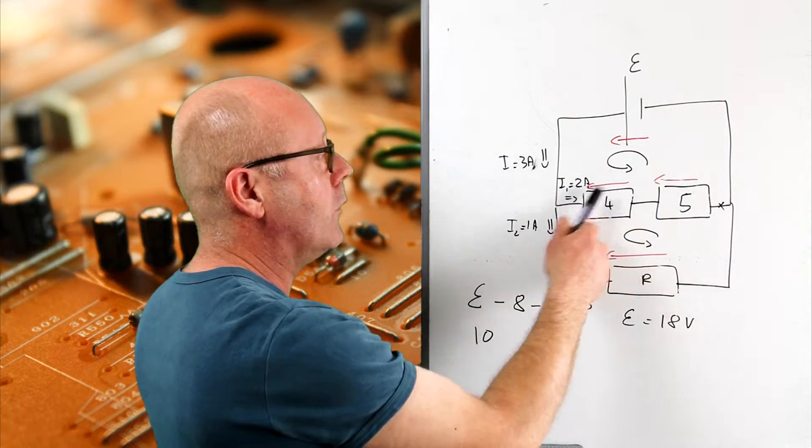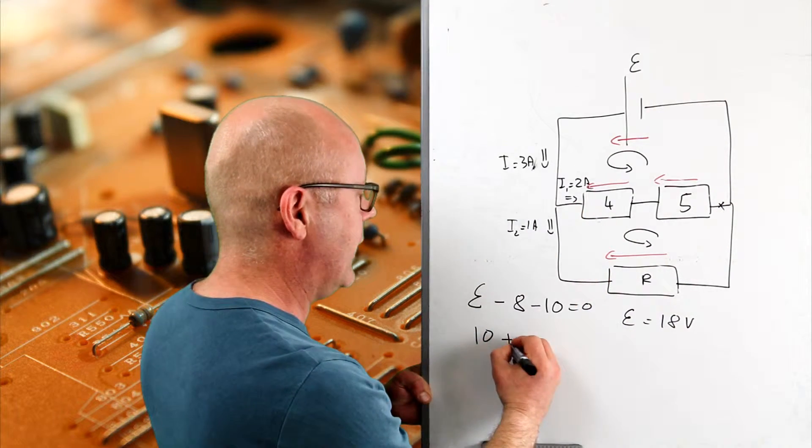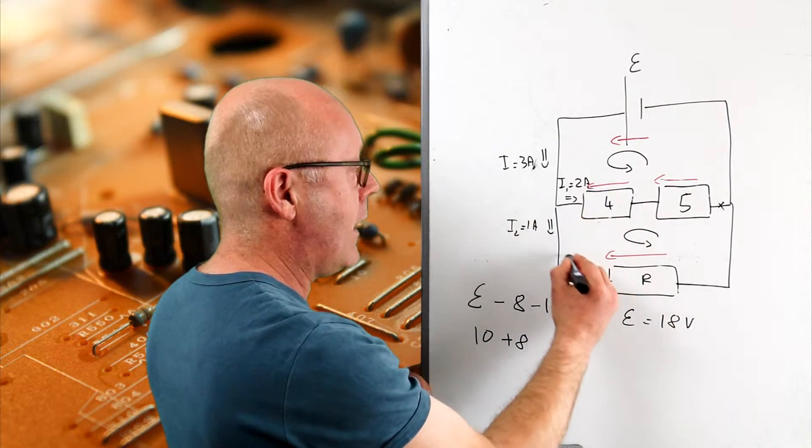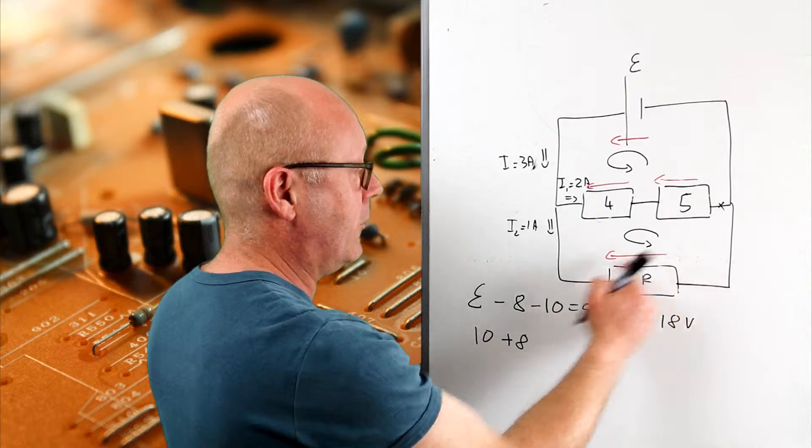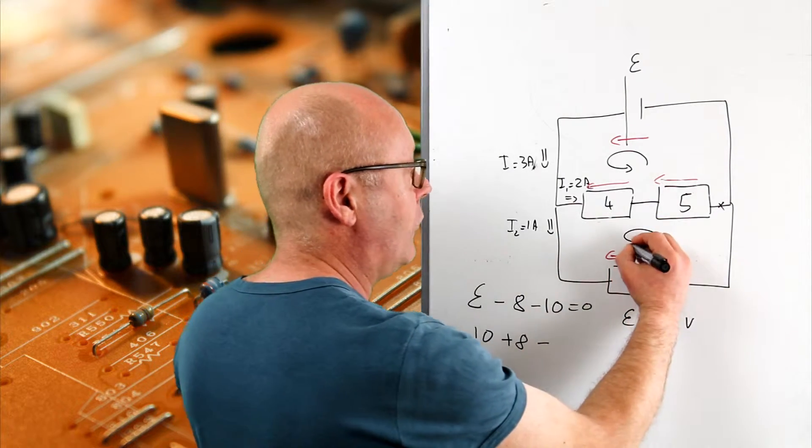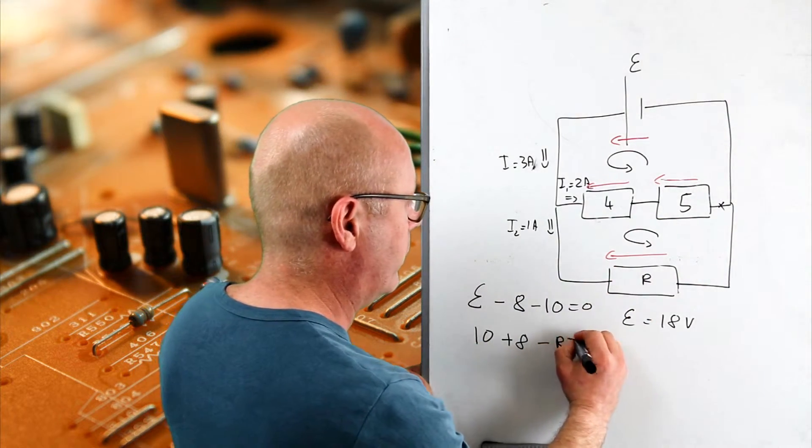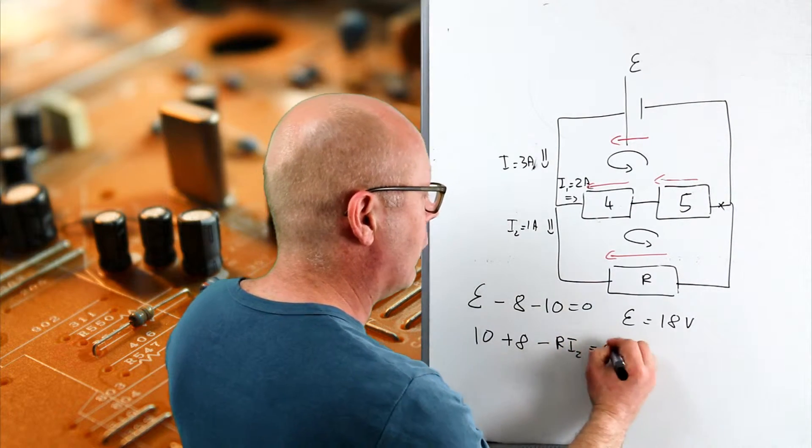I continue, 4 by 2, 8, plus 8. And then I go there and I find a potential decrease, which would be equal to V, or Ri2, equals 0.